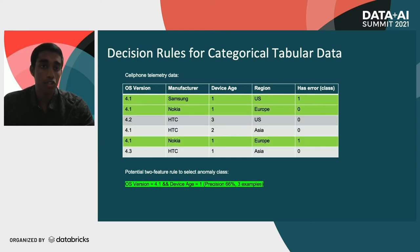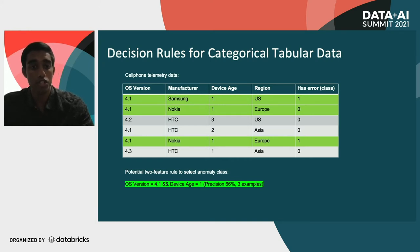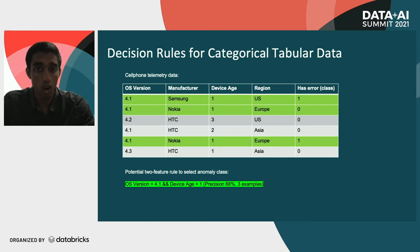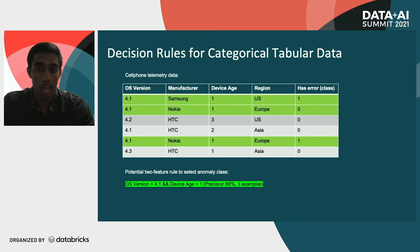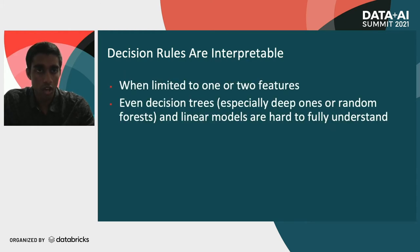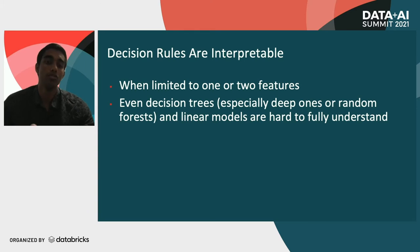Now what about two-feature rules? Here's an example: if the operating system version is 4.1 and the device age equals one, we return three different rows and it turns out two of them have the error. That's a precision of 66% returning three total examples — quite a good rule, with slightly higher precision than the first single-feature rule.